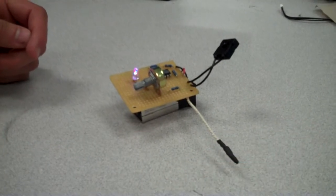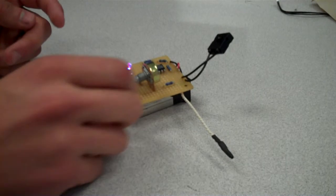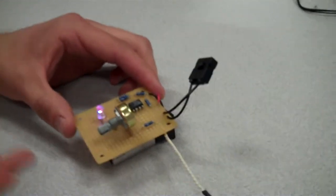You can adjust whatever temperature that changes over using the potentiometer. Turn it down and now it thinks that the air is cold. Turn it up and it thinks the air is warm.